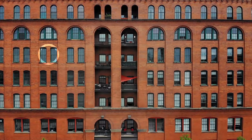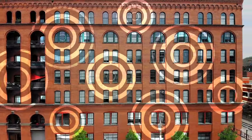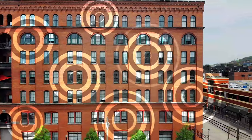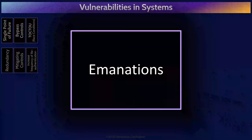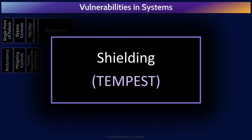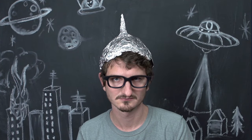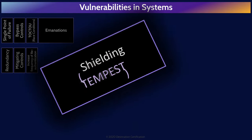Emanations are any sort of radio waves, electrical signals, lights, sounds, or vibrations that radiate from a system and can be intercepted to eavesdrop on the system, thus allowing the leakage of information. Emanations are vulnerabilities that need to be addressed, and there are three methods to do so. Shielding is various methods used to block emanations from a system so they cannot be detected — you can block electromagnetic fields with Faraday cages, sound with insulation, light with opaque walls. A type of shielding developed by the military is known as Tempest, specifically designed to shield devices that emit electromagnetic radiation. Remember: Tempest is a method of shielding.